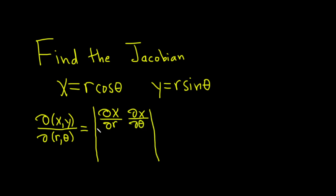And then in the second row you do the same thing but with y. So it'll be del y del r, del y del theta.